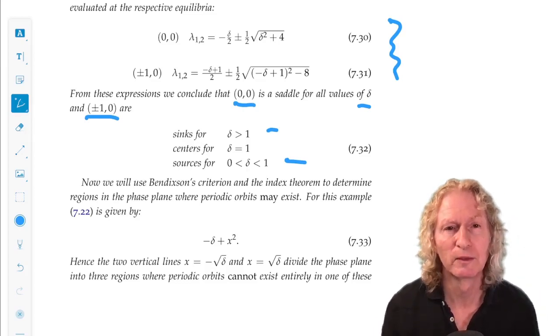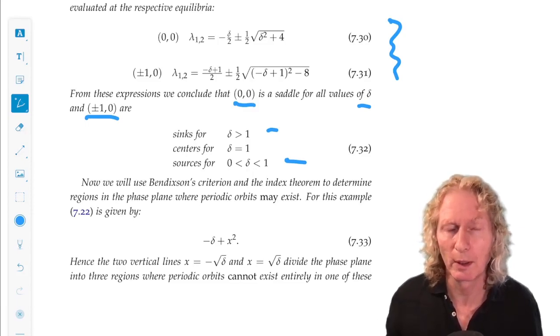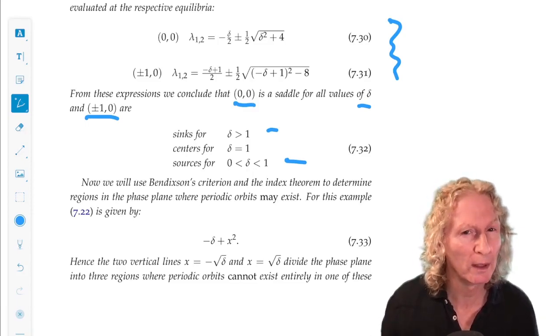Okay. Now, fine. We know all about their linearized stability. Why are we doing this? We want to know about periodic orbits and use the index theorem.